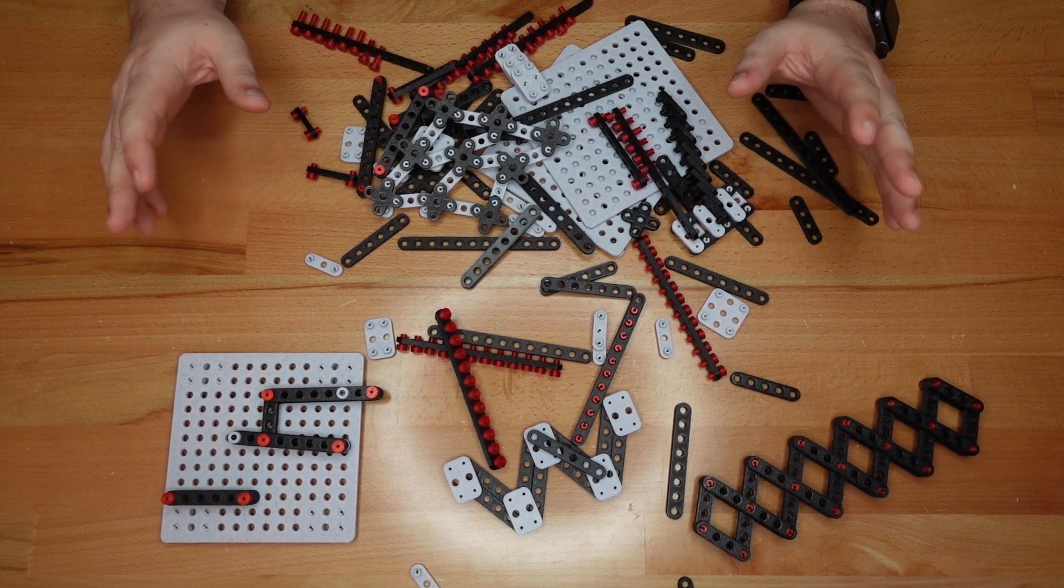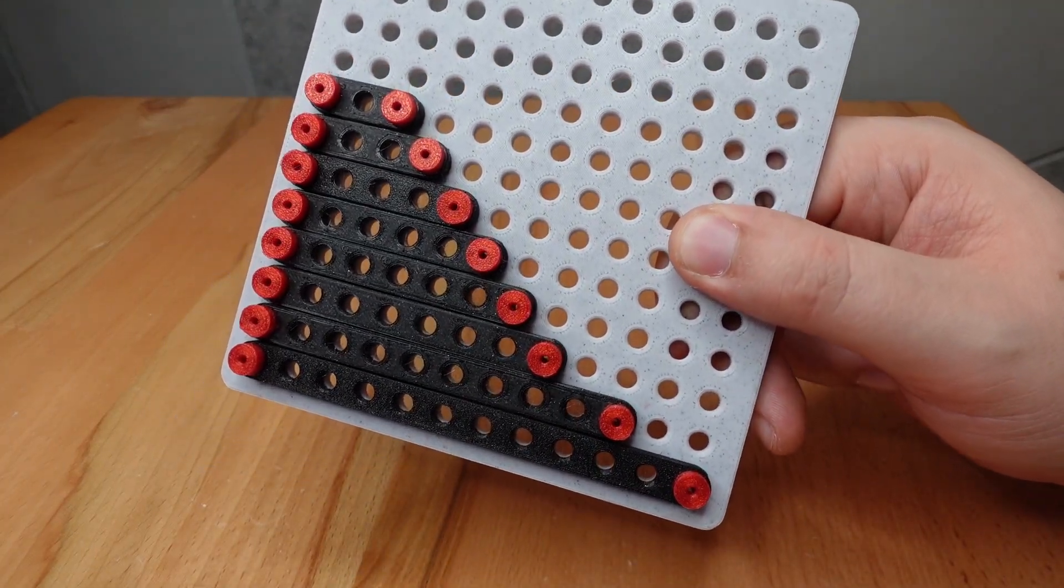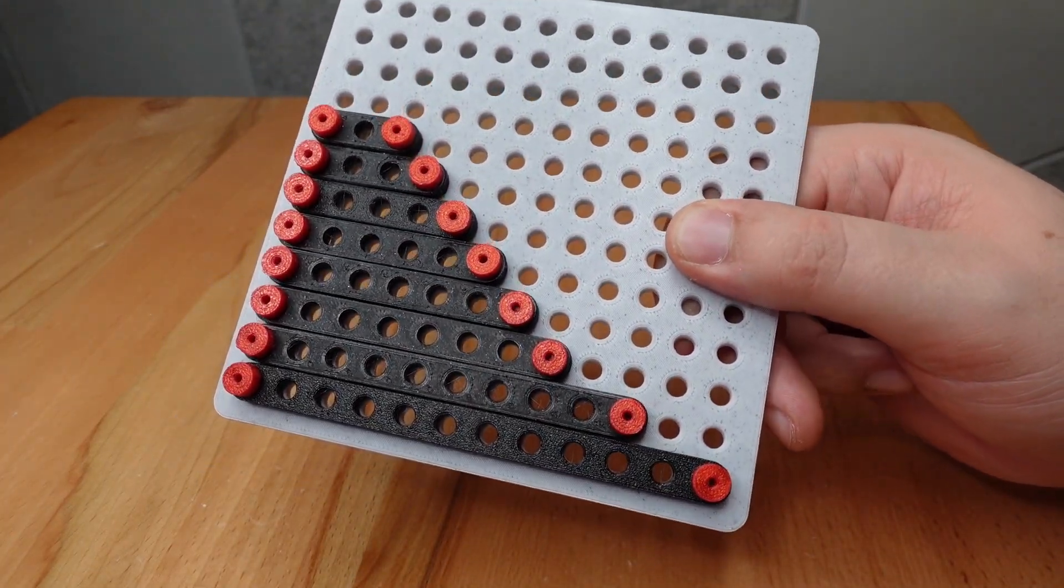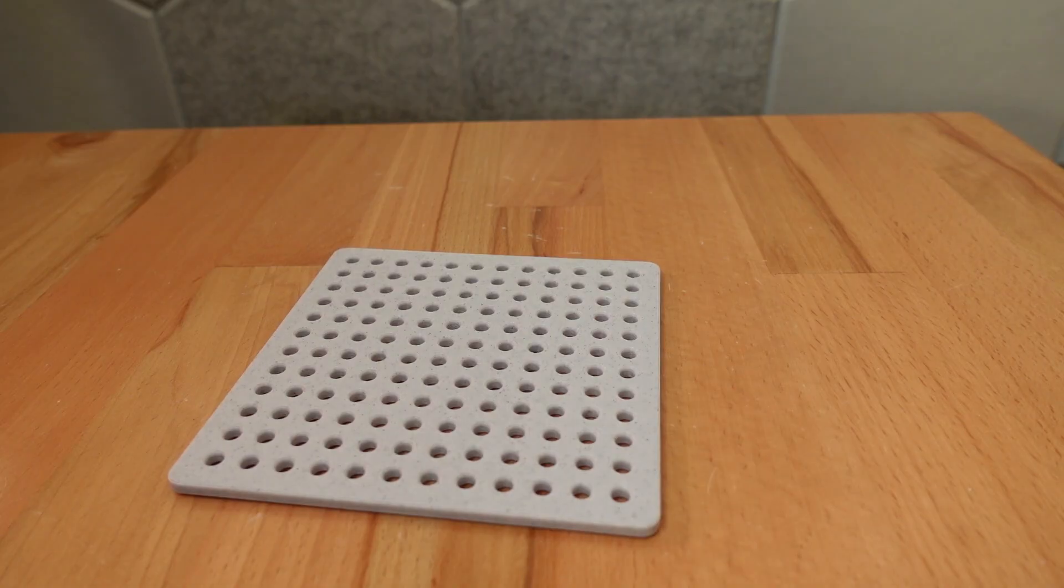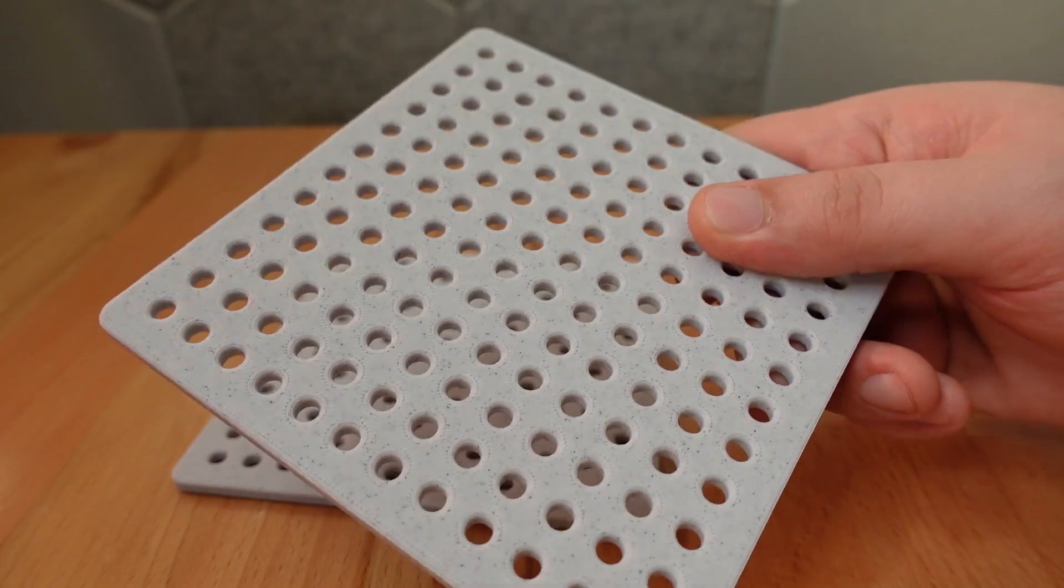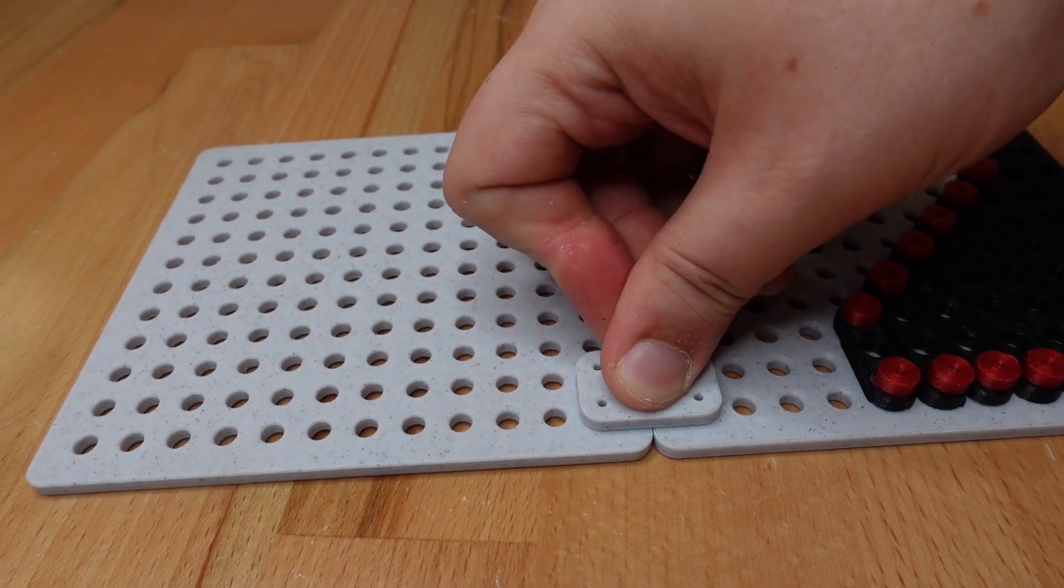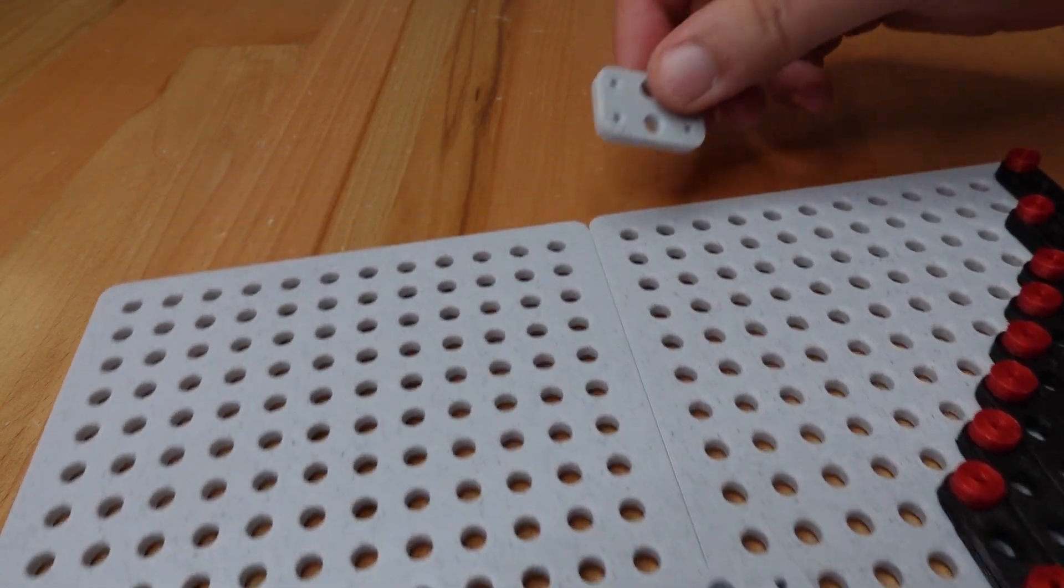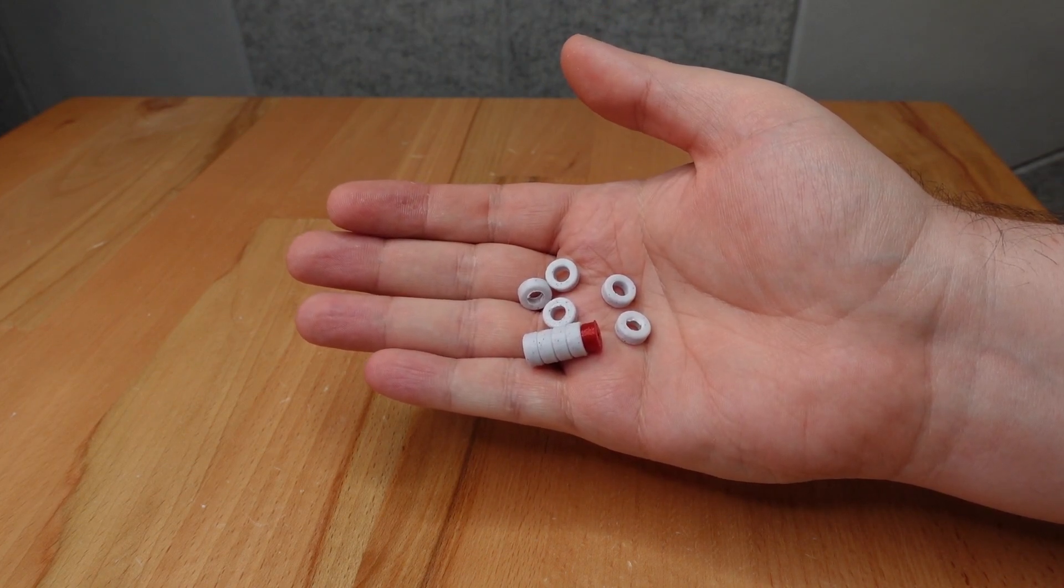This construction kit has a lot of parts, including links in various lengths from 3 to 12 units long, pins to hold those links together, a base for grounding stationary intersections, plates for locking multiple bases together or elevating sections of a mechanism, and spacers because they're both practical and mandatory for my fellow Ivan Miranda fans.